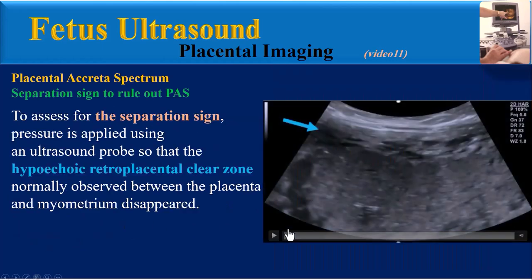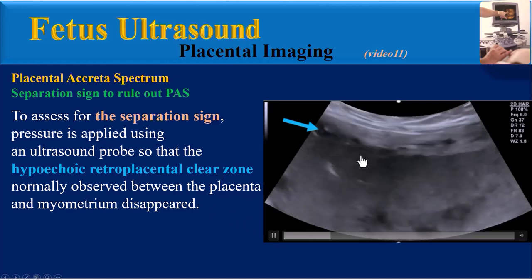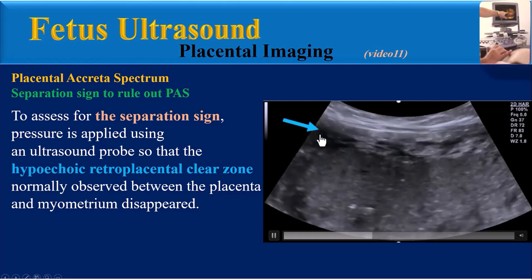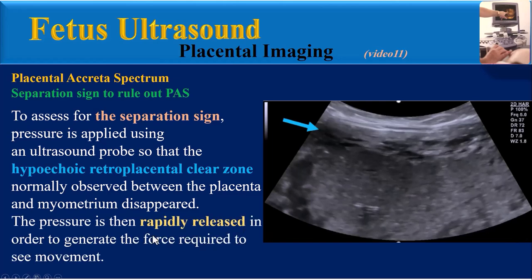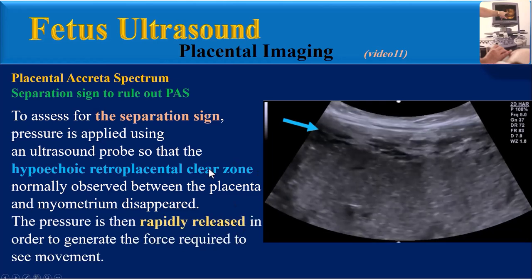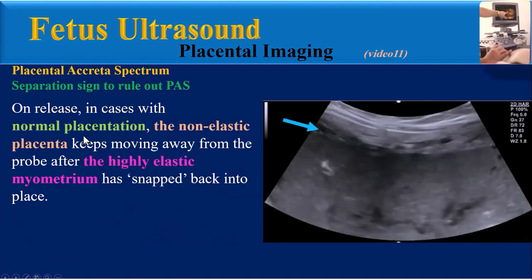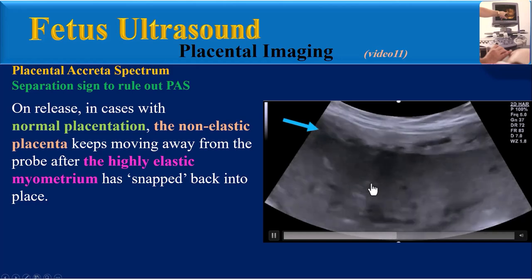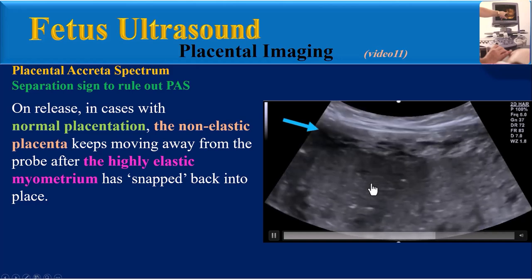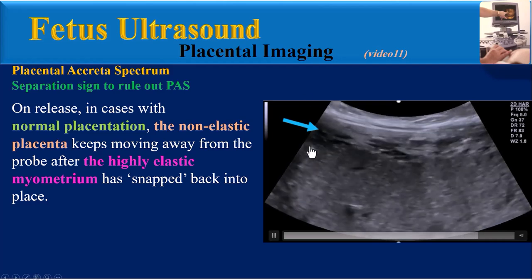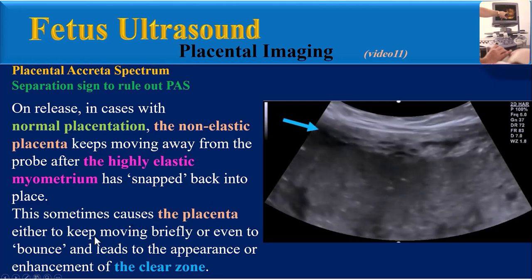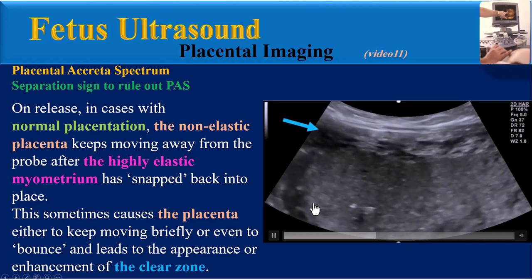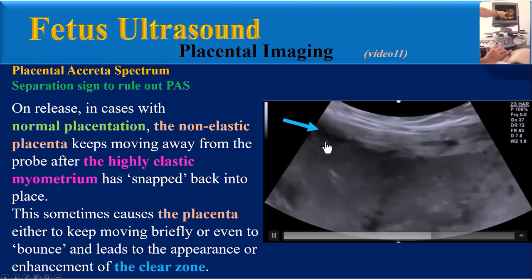To assess for the separation sign, pressure is applied using the ultrasound probe so that the hypoechoic retroplacental clear zone normally observed between the placenta and myometrium disappears, as shown in this clip. The pressure is then rapidly released in order to generate the force required to see movement. On release, in cases with normal placentation, the non-elastic placenta keeps moving away from the probe after the highly elastic myometrium has snapped back into place. This sometimes causes the placenta to keep moving briefly or even to bounce, leading to the appearance or enhancement of the clear zone.